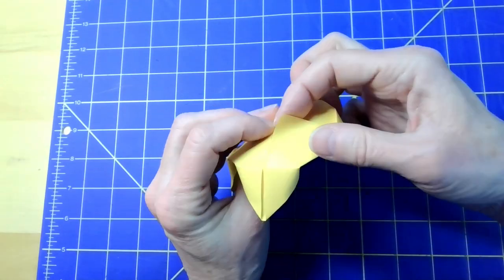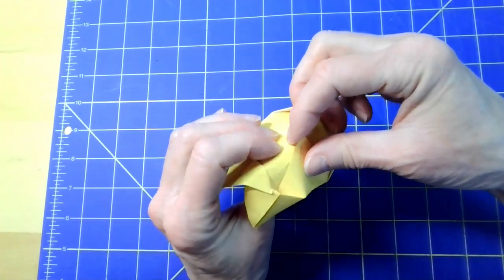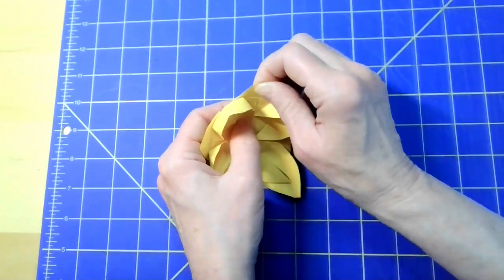Finally, take the remaining triangular flaps on the back and gently pull them up and around to hold the flower in place. Be careful not to rip the paper as you pull.